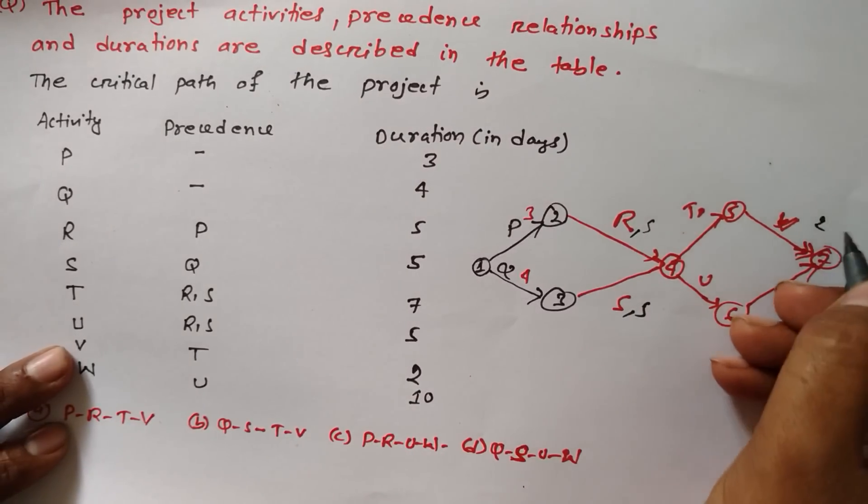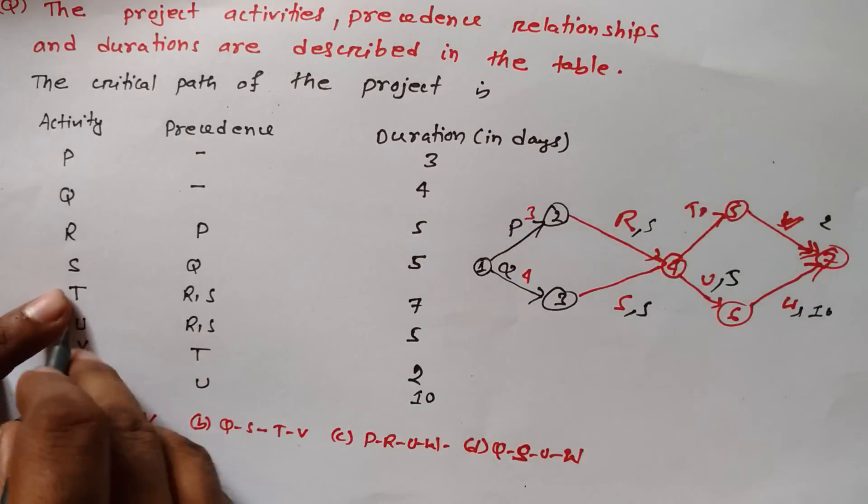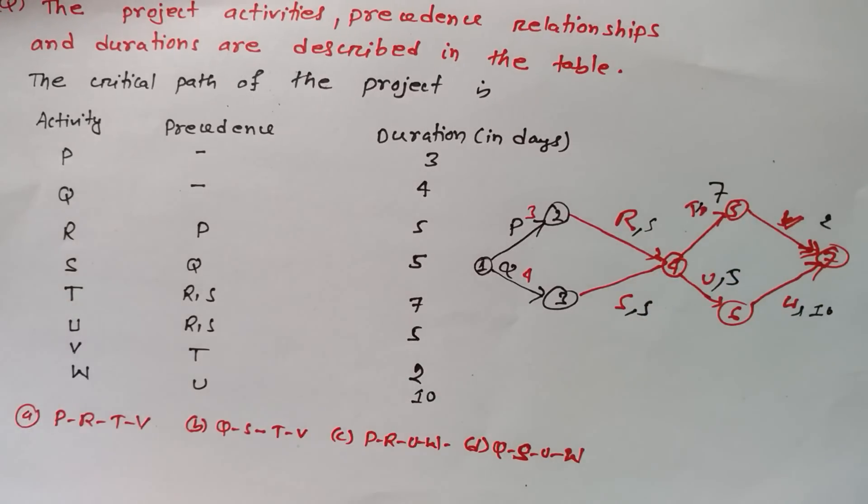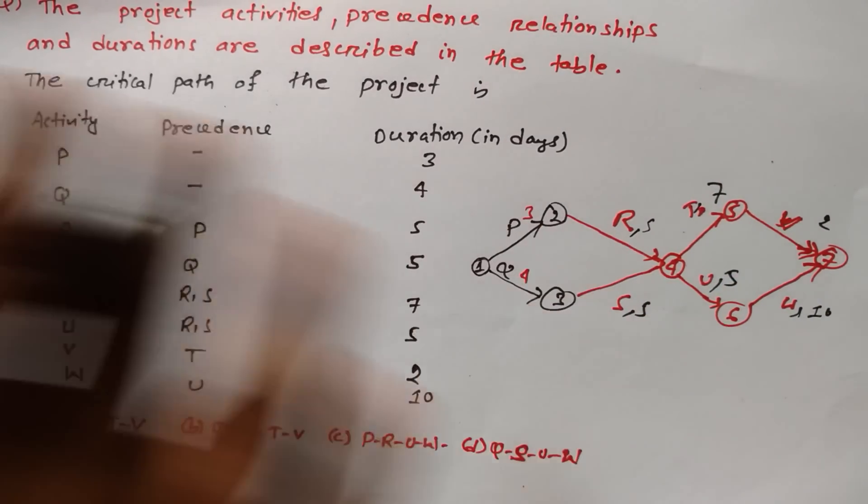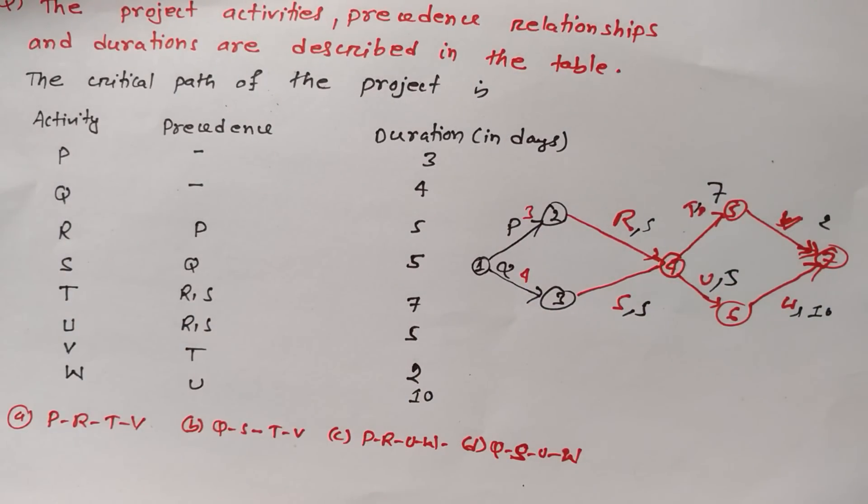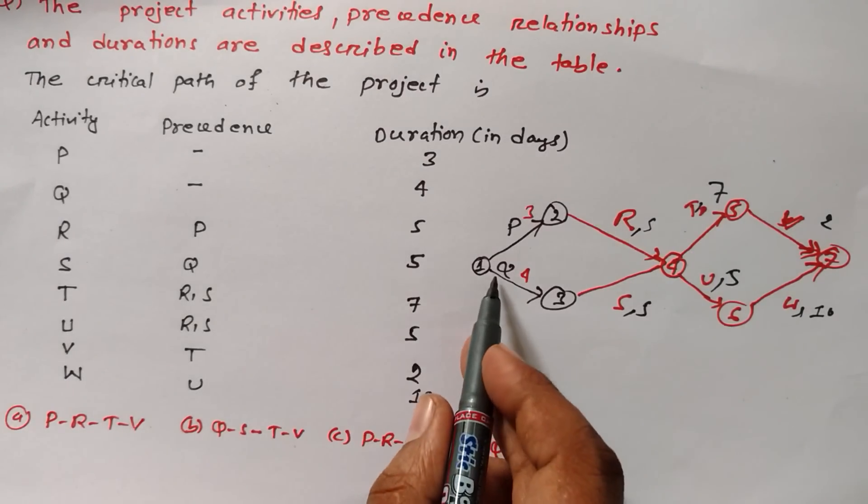So here we got the network diagram. Now we have to find out critical path. Critical path is that path which is taking maximum number of days and maximum time to complete the project. We have to see how many paths are there to complete the project - paths are Q-S-U-W, P-R-U-W.